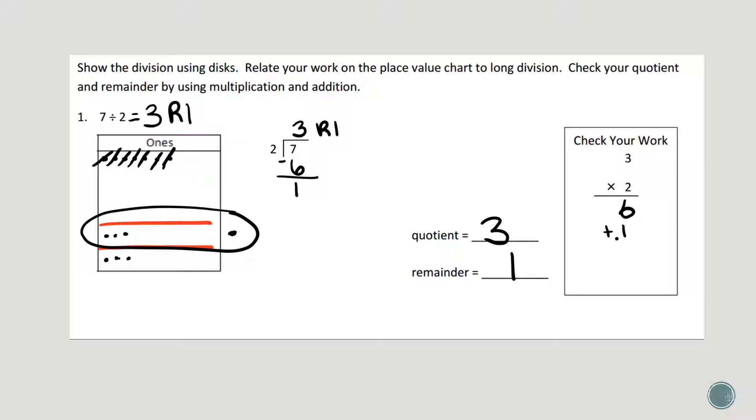So what I need to do is take my remainder and add it on. 6 plus 1 is 7. Now I've gotten to that 7. They match. I can checkmark it. I know I've got the right answer.